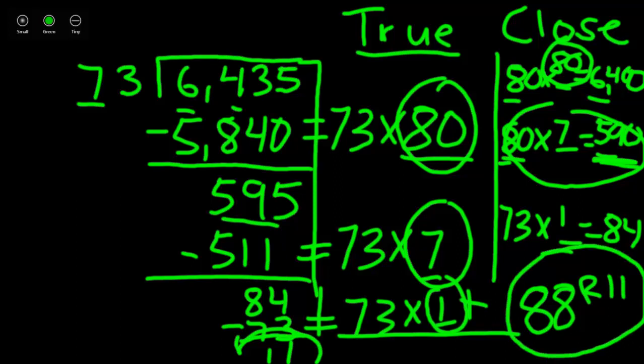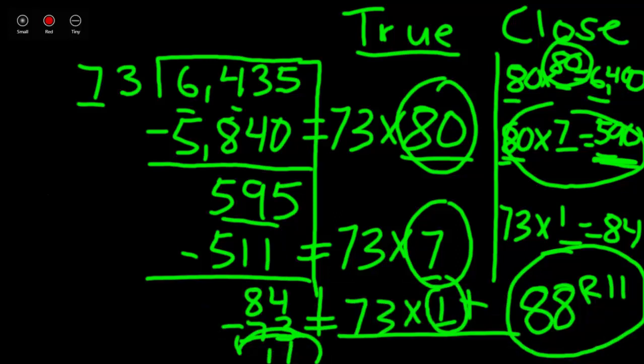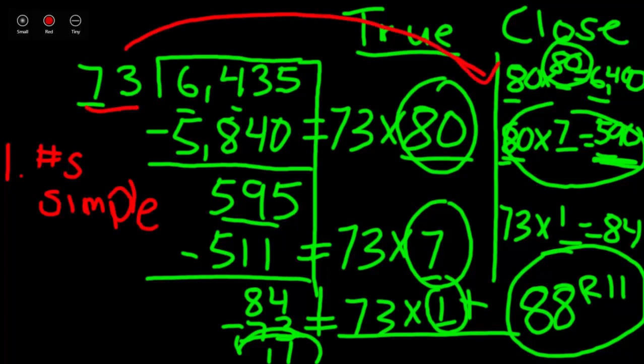Now, let's look at everything that we did and break this down into a couple steps. The first step that we did was we made our numbers simple by making 73, 80, always round that up. And then we took our first two place values of 6435 and turned that into 6400.